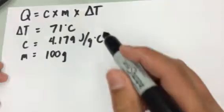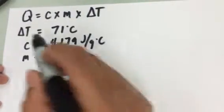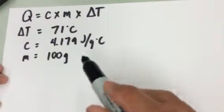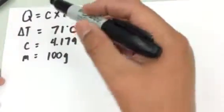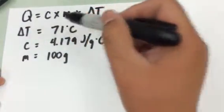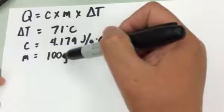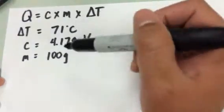So with all three components of that equation, you should be able to solve for Q by just plugging it into the equation. So let's do that. So it's going to be 4.179 times 100 grams times 71 degrees Celsius.